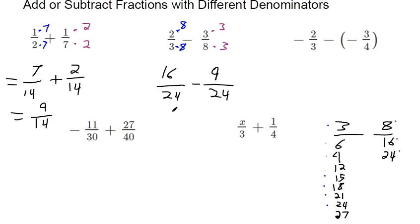That way, the denominators are the same. And so now, if you subtract 16 by 9, that makes 7 over 24.